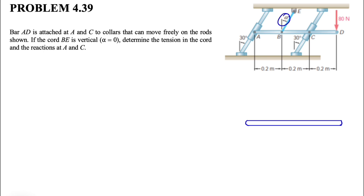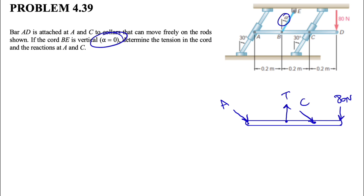We're going to start with the free body diagram as always. At point D we have the 80 Newton force, and we have the tension in the cable at point B, which will be vertical since alpha is zero. We have two forces at A and C. Since we don't consider any friction at points A and C, for the collars we only have a normal force — perpendicular to the collar at A and the same at C. We'll take a rotated axis system, with this direction as our y-axis and this one as our x.